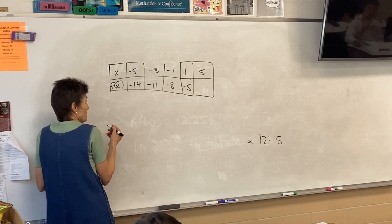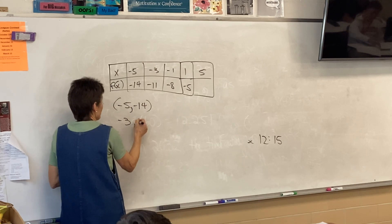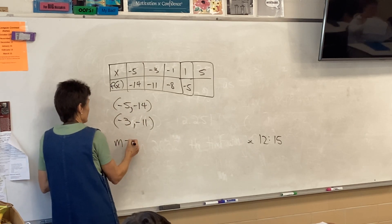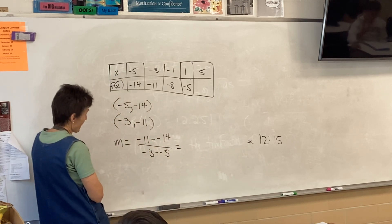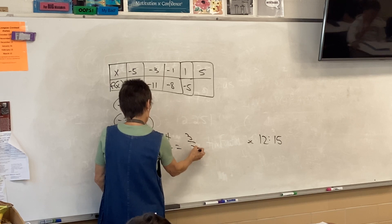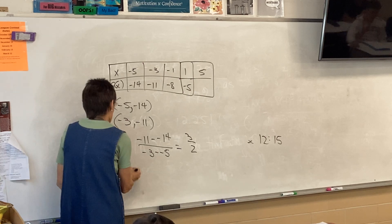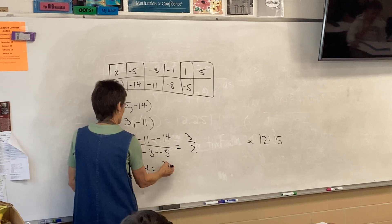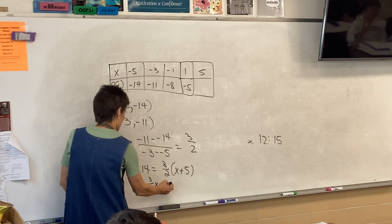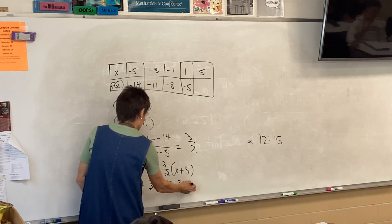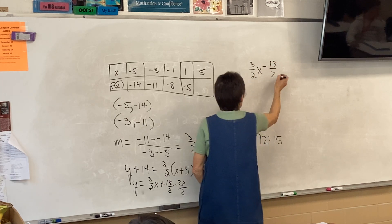And since it's a line, isn't that easy to do? So, what do we do? If we want the line, we need to understand that I have a slope. So, I'm just going to take the first two points, which are negative 5, negative 14, and negative 3, negative 11. And I'm going to find the slope. So, the slope is negative 11 minus negative 14 over negative 3 minus negative 5. So, what is that? 3 over 2. So, my slope is 3 halves.